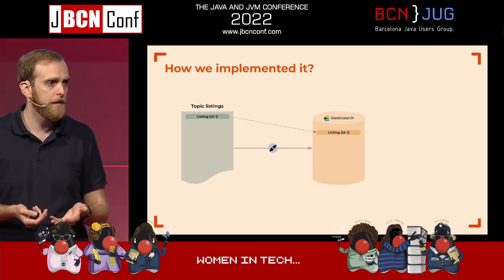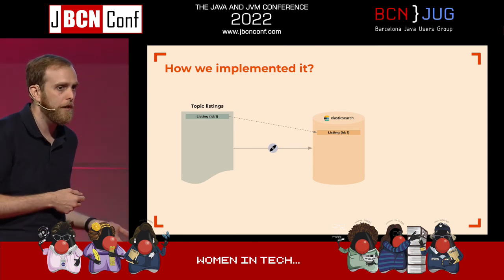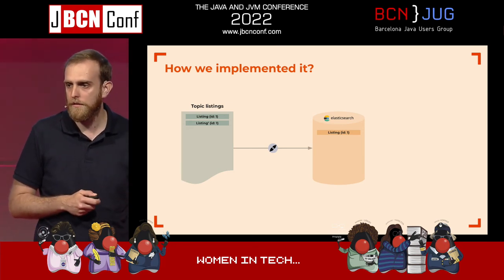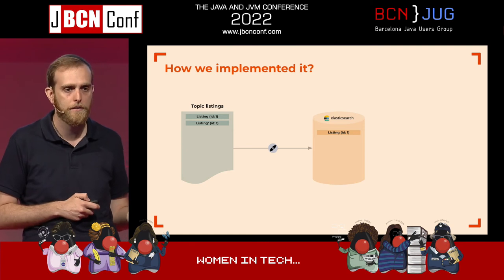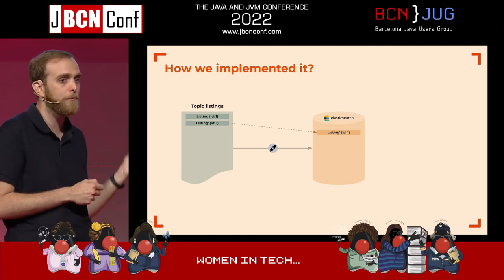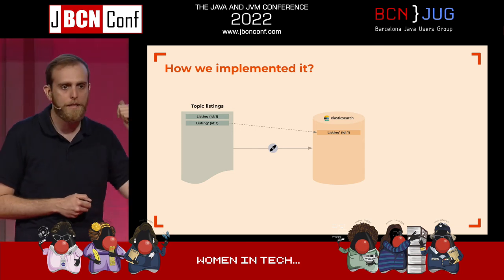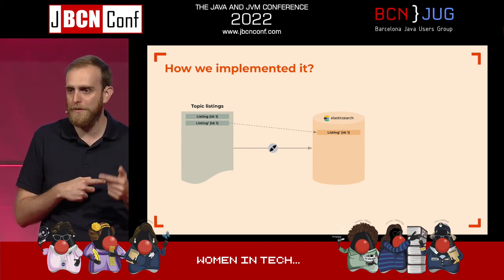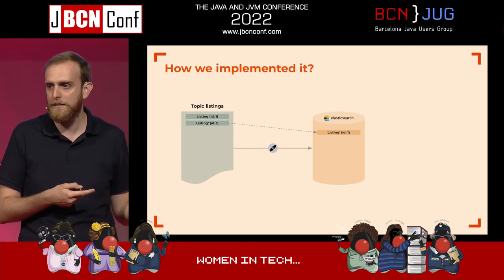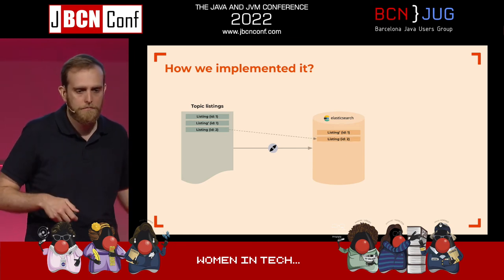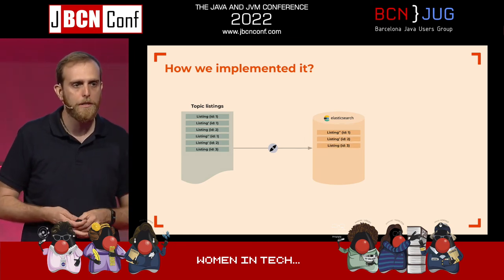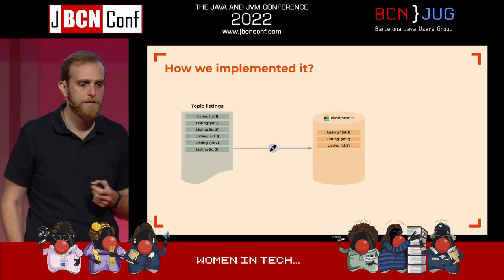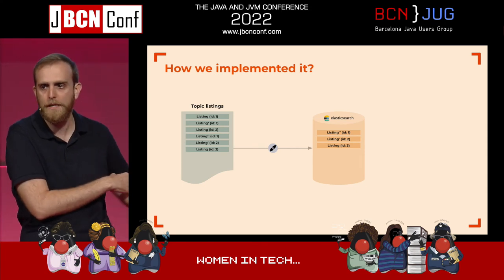Whenever a new listing enters the system, it gets stored in Elasticsearch. When a new version of the listing comes in on the Kafka topic, we don't write another record to Elasticsearch — we modify the existing record. So Elasticsearch doesn't have the full history of listings, but rather the last state of each listing. In the topic you may see many records, but in Elasticsearch there are only three because there are just three listings.